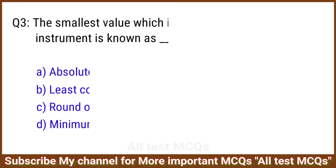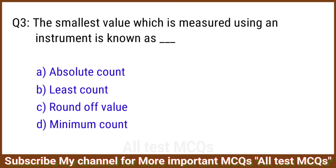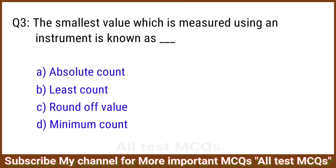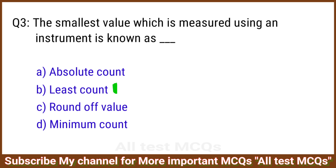Q3. The smallest value which is measured using an instrument is known as? The right answer is option B: Least count.